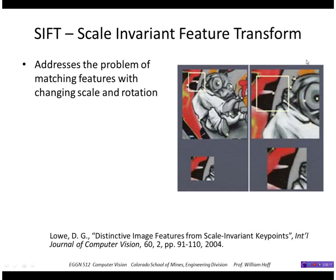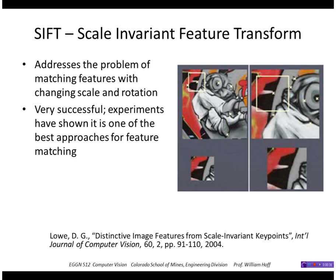SIFT stands for Scale Invariant Feature Transform. This feature detector addresses the problem of matching features with changing scale and rotation. It is primarily used for recognizing objects — once you have a training image of an object, you can recognize it in a new image. Experiments have shown it is one of the best approaches for feature matching, and it was initially developed by Lowe in 2004, with many variants since.